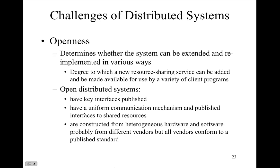Open distributed systems are expandable and distributed. You publish key interfaces that are made available and distributed, with uniform communication mechanisms for publishing and shared resources. A centralized example is the domain name system — DNS is an open distributed system. Everybody shares it: if I have bhecker.com, I don't have to tell every server about it; they go to the open distributed database, look it up, and get the IP address.